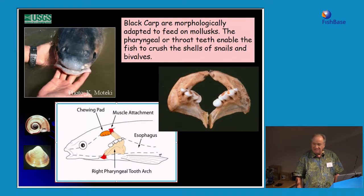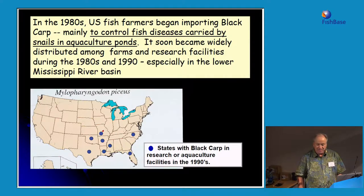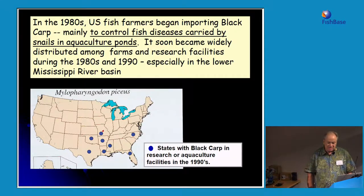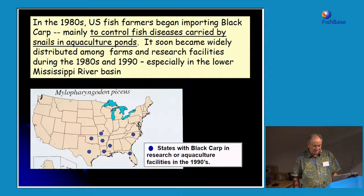The black carp is a carnivore adapted to feed on snails and bivalves. Its pharyngeal or throat teeth are similar in appearance to human molars, enabling them to crush the shells of most molluscs that pass into their mouth. In the 1980s, U.S. fish farmers began importing and rearing black carp as a biocontrol agent to control diseases caused by snails in aquaculture ponds. As a result, the species was widely distributed across farms in the Mississippi Basin, especially used by catfish farmers. By the 1990s, it was estimated that over 800,000 black carp were in fish farms within the basin.